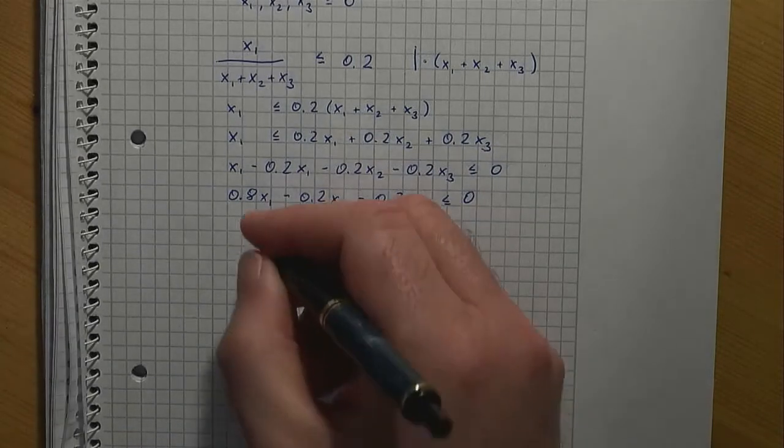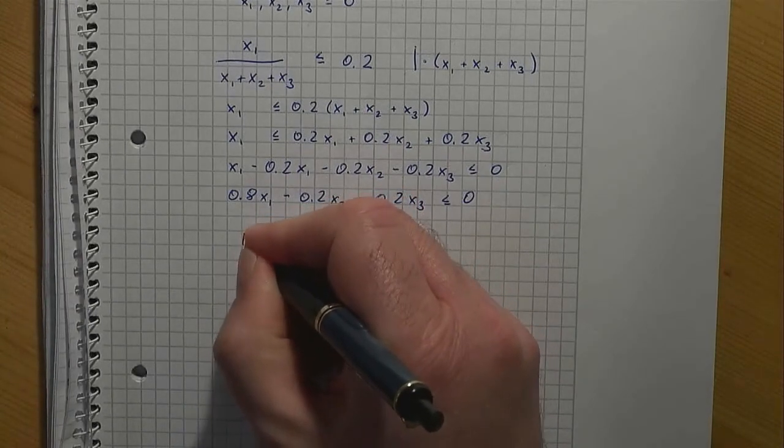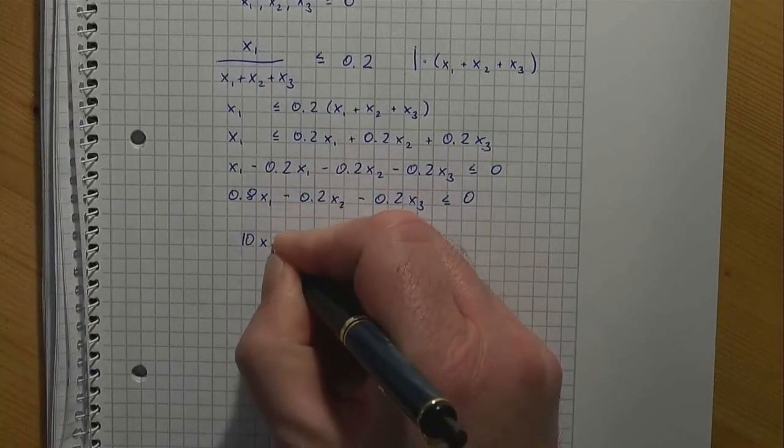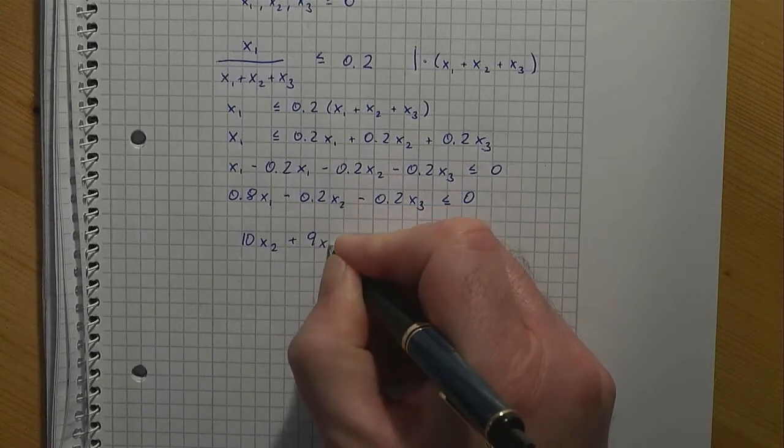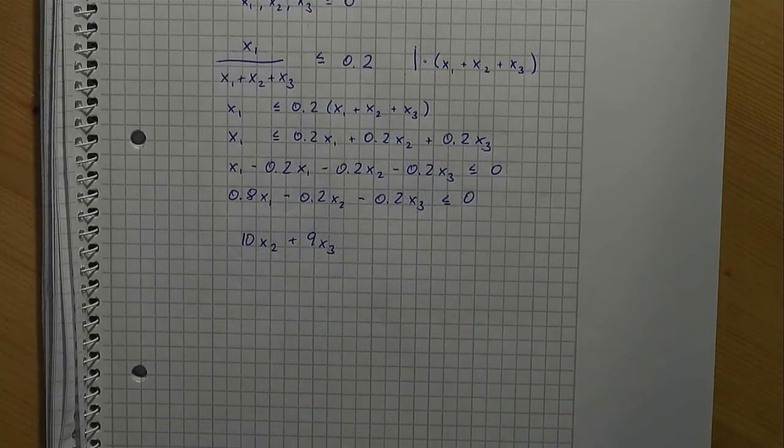Let's see. 10 times x2 plus 9 times x3 is the revenue gained by chairs and loungers. If we divide this by the total revenue, we get the revenue from chairs and loungers in percentages.